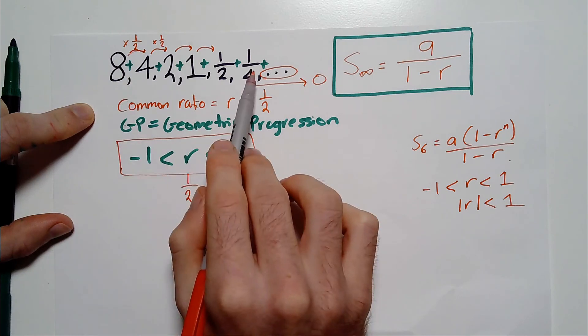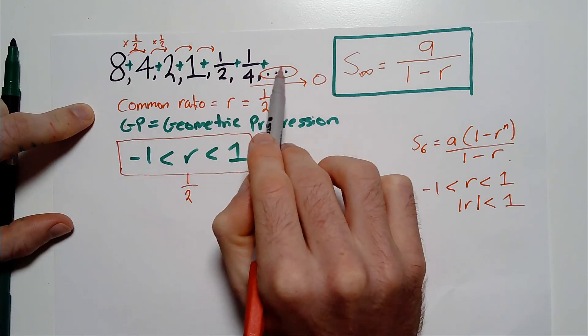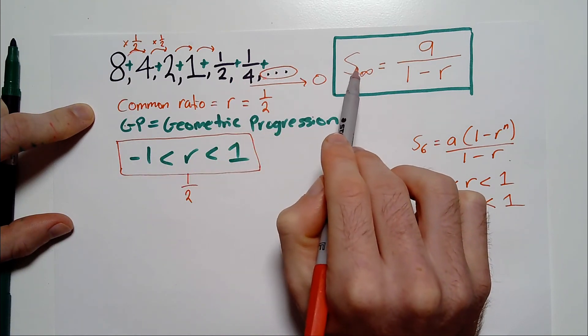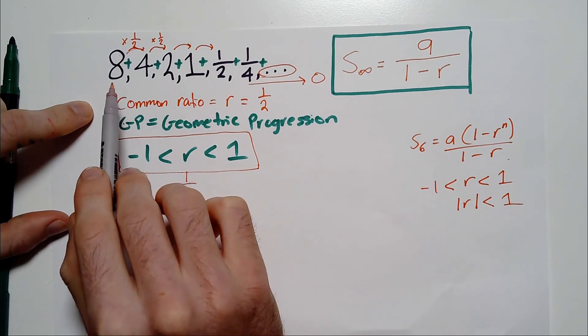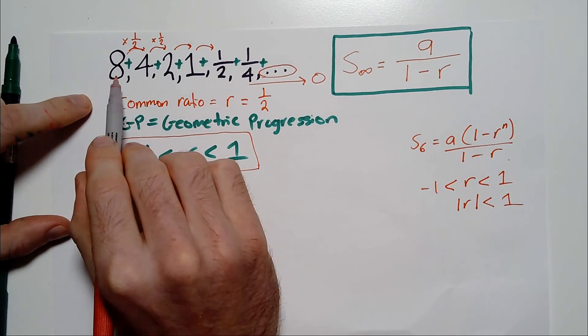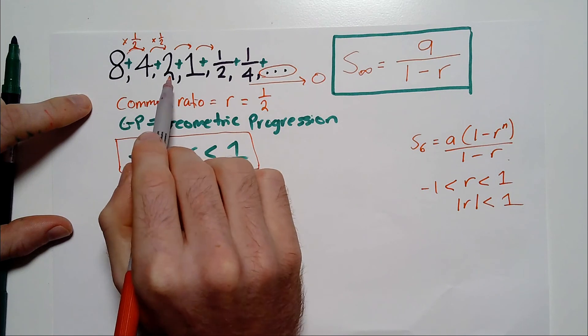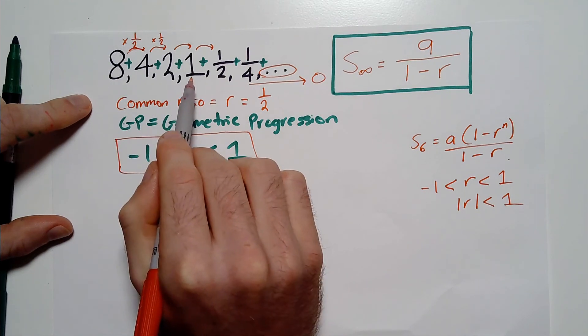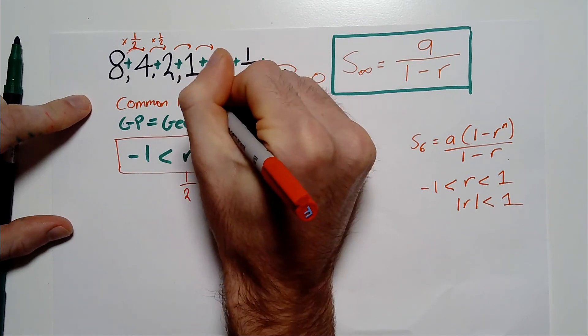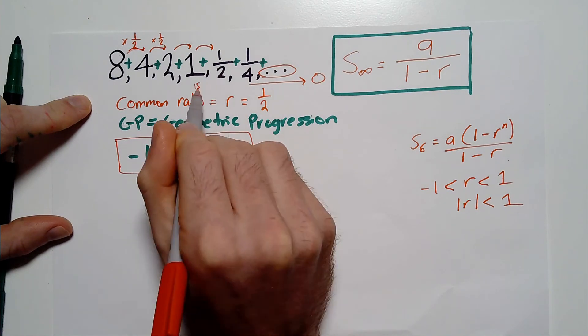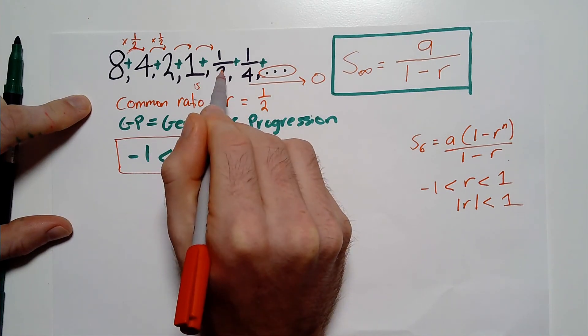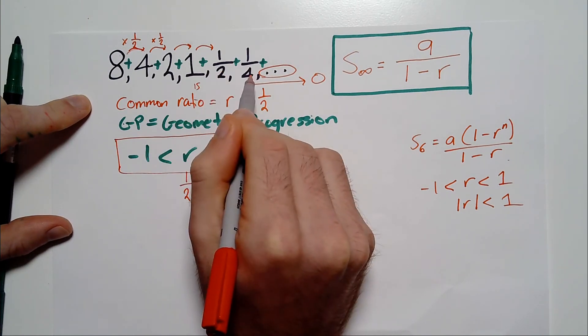So if we were to add all of these together, including all of the fractions that are going to come after, what number do you think we're going to get closer to? Well, let's just think about it before I apply the formula. So we have 8 plus 4, which is 12, plus 2, which is 14, plus 1, which is 15. So by this point, up to the 1, we're up to 15. And then after 15, we go 15 and a half, followed by 15 and 3 quarters.